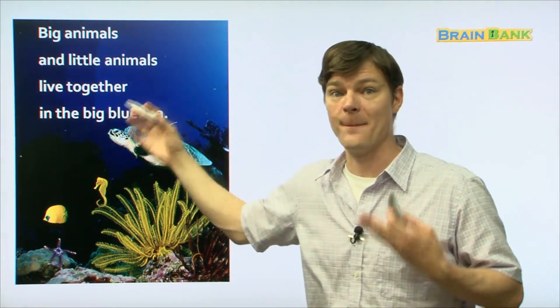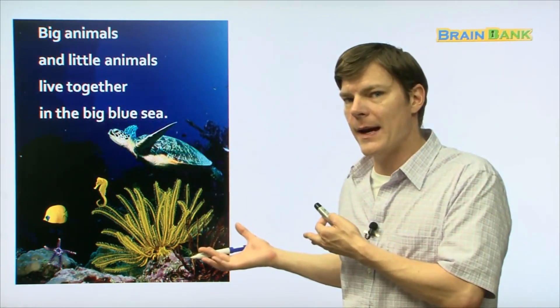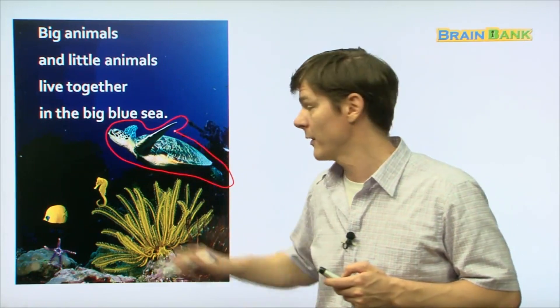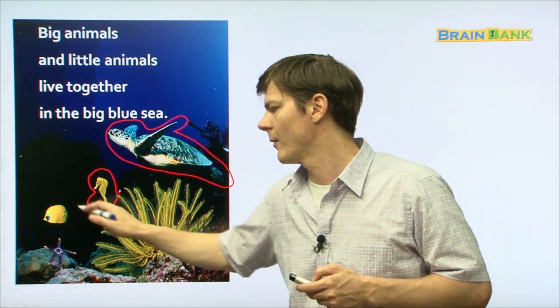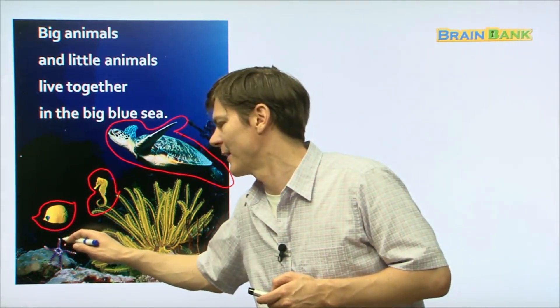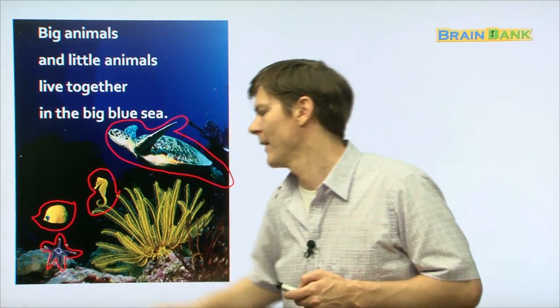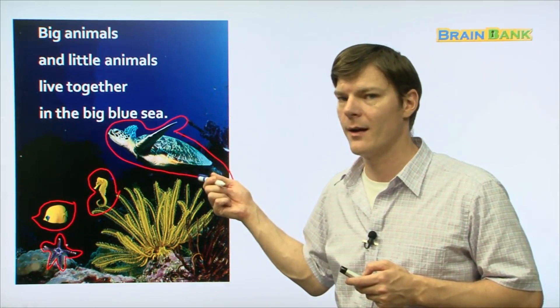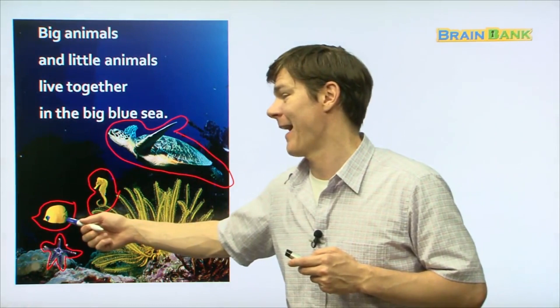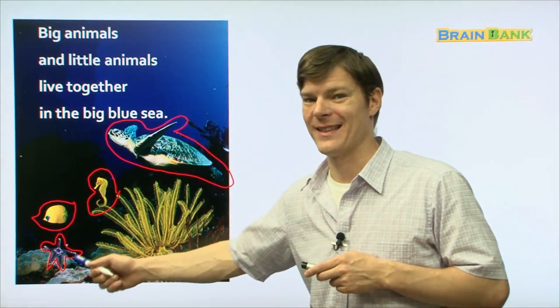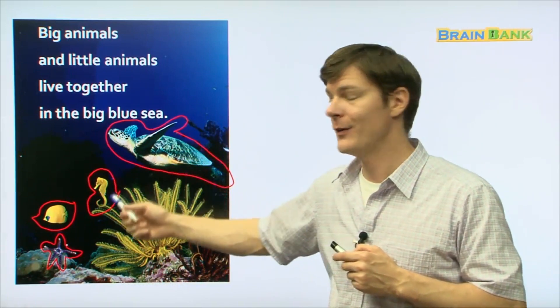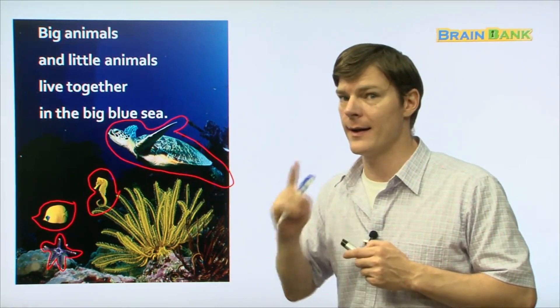Big animals and little animals live together in the big blue sea. And looking at this page, can you see some animals that are big? Can you see some little animals? So tell me what is this called? A sea turtle, that's right. And then we have a seahorse and then we have a butterfly fish and last the sea star or starfish. So out of these four animals that you see on this page, which one is the biggest? That's right, the sea turtle.